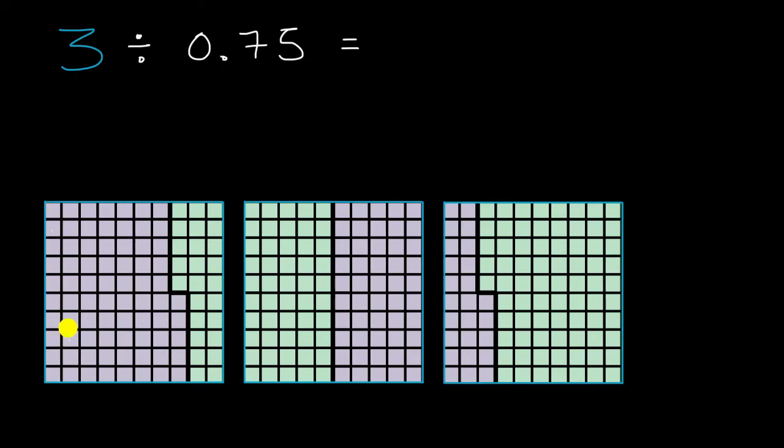So this is 10, 20, 30, 40, 50, 60, 70, and then five hundredths. So this right over here, this is one group of 75 hundredths. And then in green, you have another group of 75 hundredths.